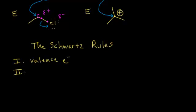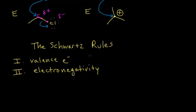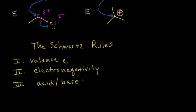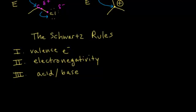The second Schwartz rule is electronegativity. Understanding electronegativity differences and how those affect molecules and reactions is extremely important. The third Schwartz rule is acid-base chemistry — understanding Bronsted-Lowry acids, understanding Bronsted-Lowry bases, and being able to follow protons in mechanisms. We spend a lot of time on acid-base chemistry, and you'll really see how important this is when we start doing mechanisms.